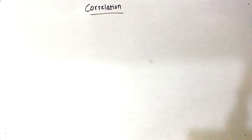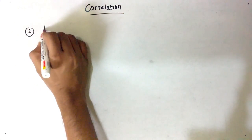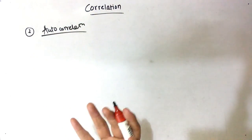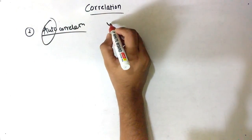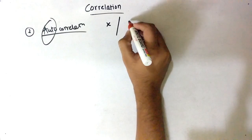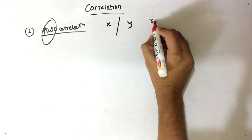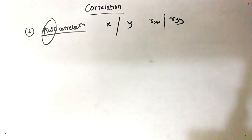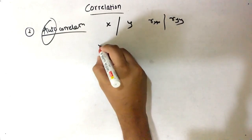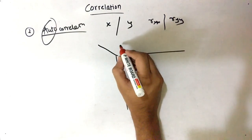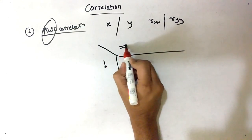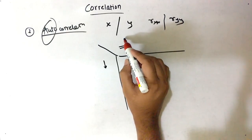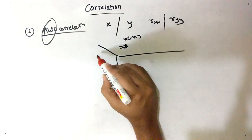Now let's talk about autocorrelation. As the name suggests, 'auto' means there is only one variable — X, or there can be Y. So it is R_XX, or it can be R_YY. We follow the same steps again using this matrix. In one direction there is always the negative value, meaning Y(-n), and in the other direction the positive value, meaning X(n).